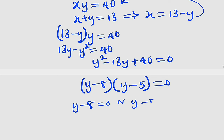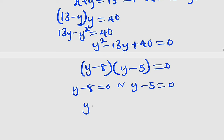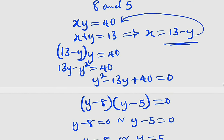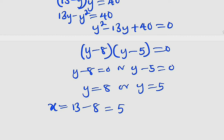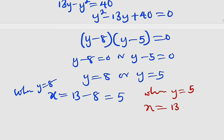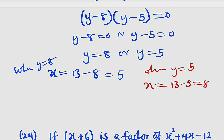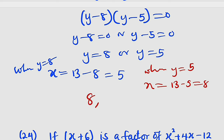Setting each factor equal to zero: y minus 8 = 0 or y minus 5 = 0, which gives y = 8 or y = 5. Since x = 13 minus y, when y = 8, x = 13 minus 8 = 5; and when y = 5, x = 13 minus 5 = 8. In both cases the values are interchangeable. The two numbers are 8 and 5 — they multiply to 40 and add to 13.